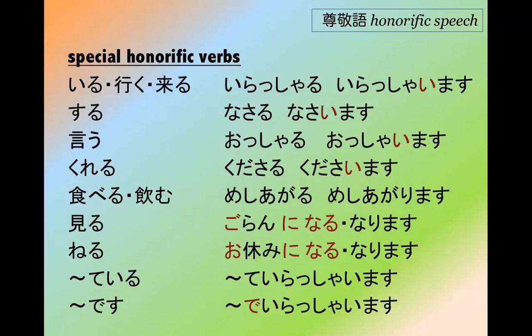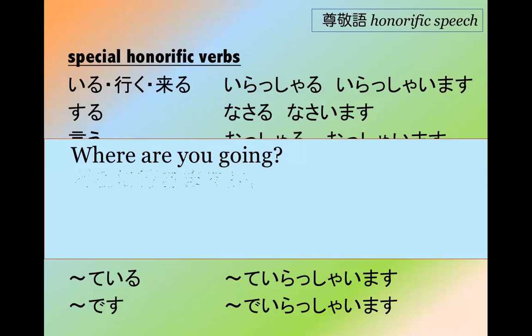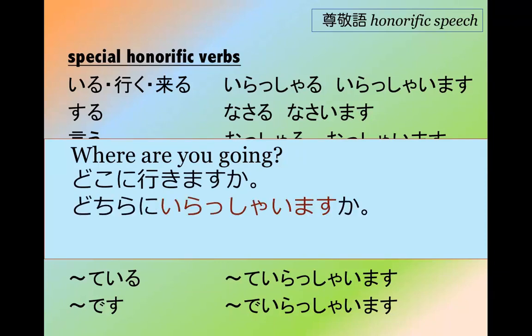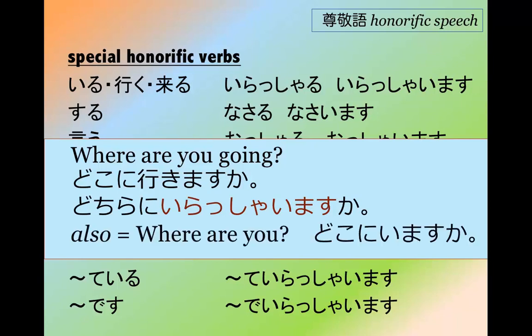In the honorific form, if you want to say 'Where are you going?' — Doko ni ikimasu ka? — you would say Dochira ni irashaimasu ka? Note that this also means 'Where are you?' (Doko ni imasu ka?). The honorific verbs are often vague in the sense that being vaguer is more polite. You just have to know from context whether it means 'where are you going' or 'where are you.'